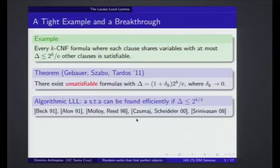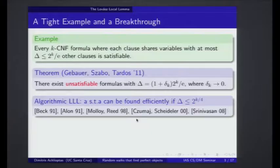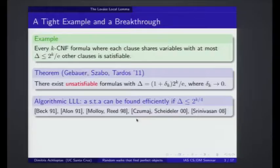A question that was asked pretty much as soon as the LLL came about is: you can prove that a satisfying assignment exists, but can you find such an elementary event efficiently? People worked on this problem for a very long time. Until 2008 or so, in the case of satisfiability, you could find efficiently a satisfying truth assignment if the amount of conflict was as high as 2^k over 4, which is a very big difference from 2^k over e. This was a long series of results, some of them pretty technically heavy.